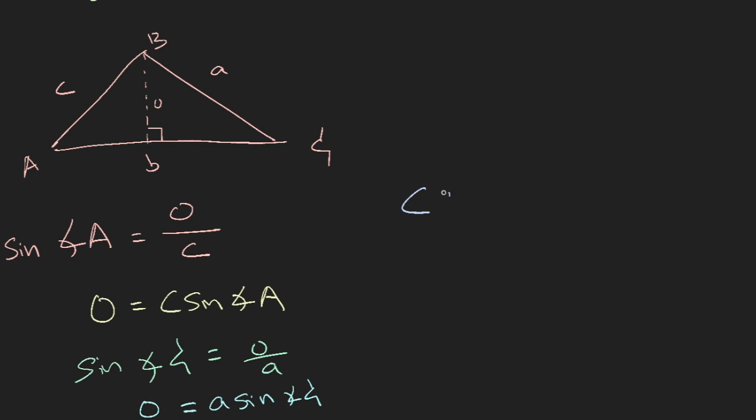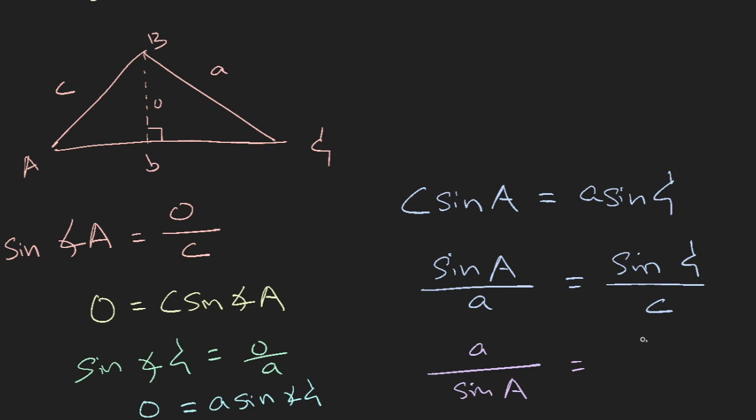So since this O and this O is the same side, you have c sine angle A equals a sine angle C. So if we rearrange this, you will have sine angle A divided by a is equals to sine C over c. And if this is true, then the reciprocal will be true, because you can always cross multiply, and once you cross multiply, you will have a over sine capital A equals to c over sine C.